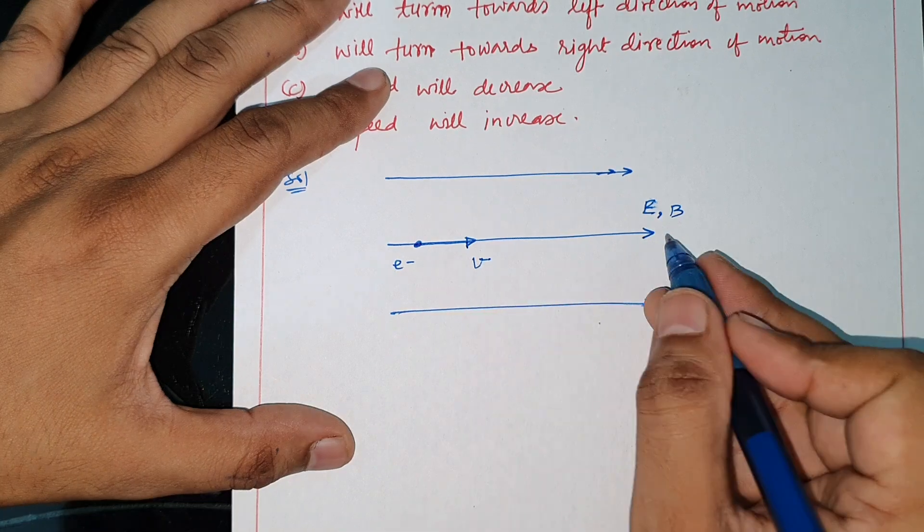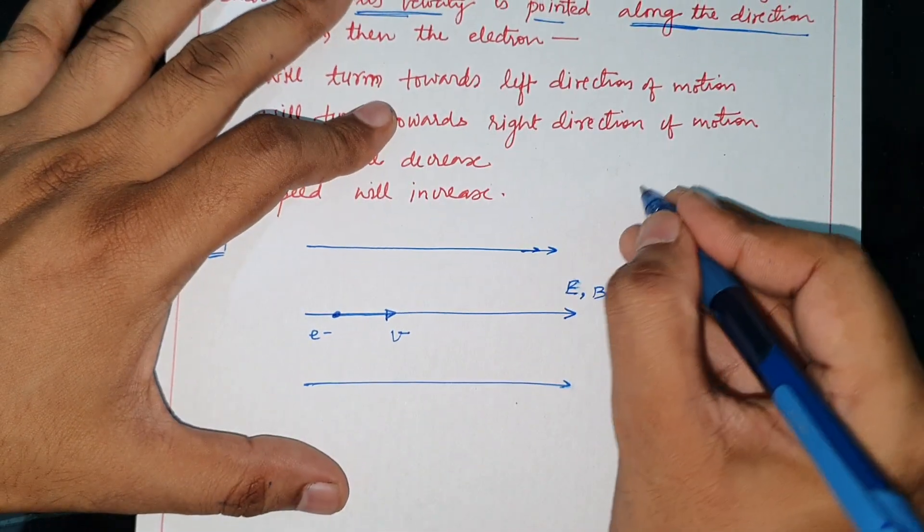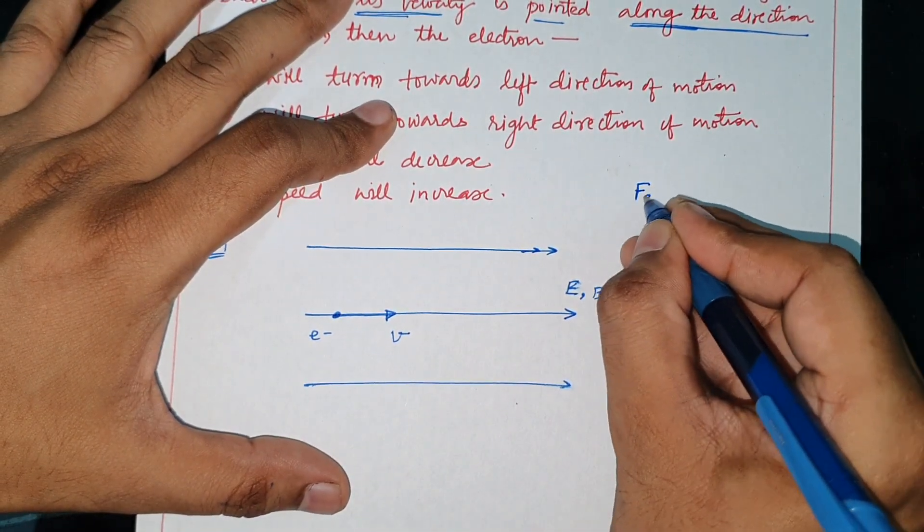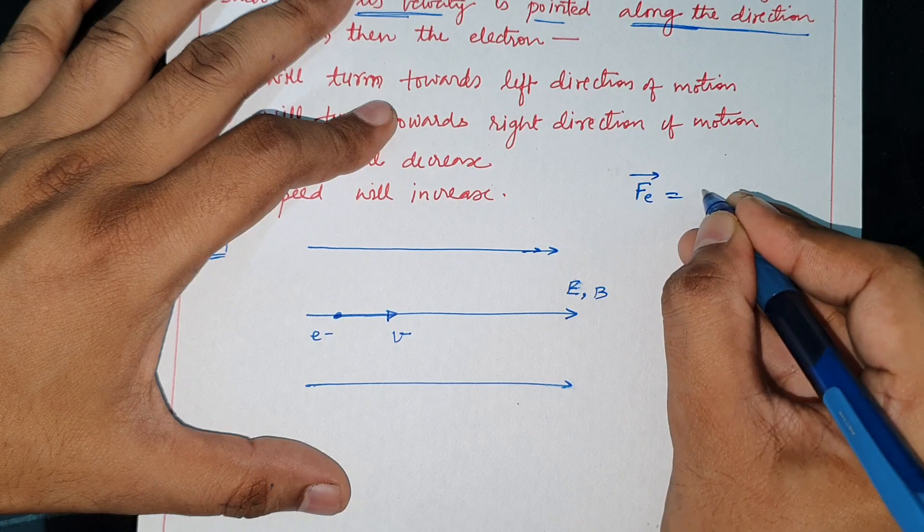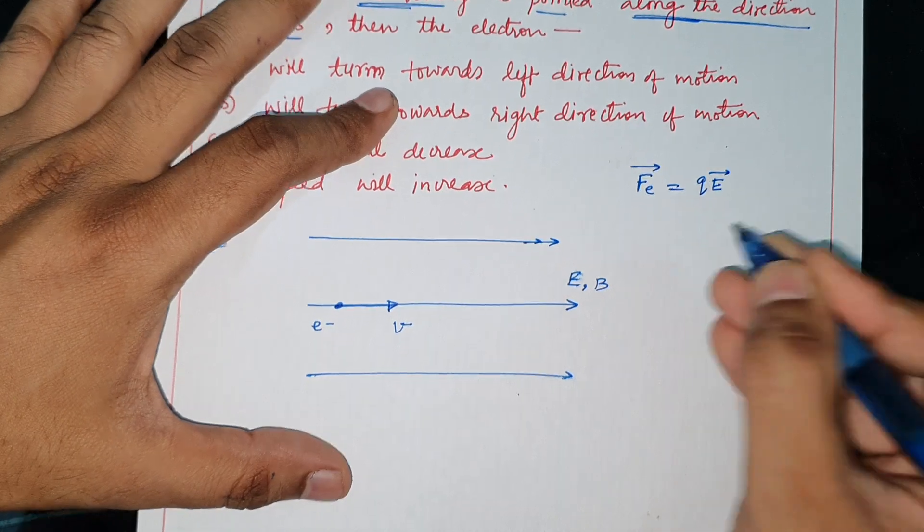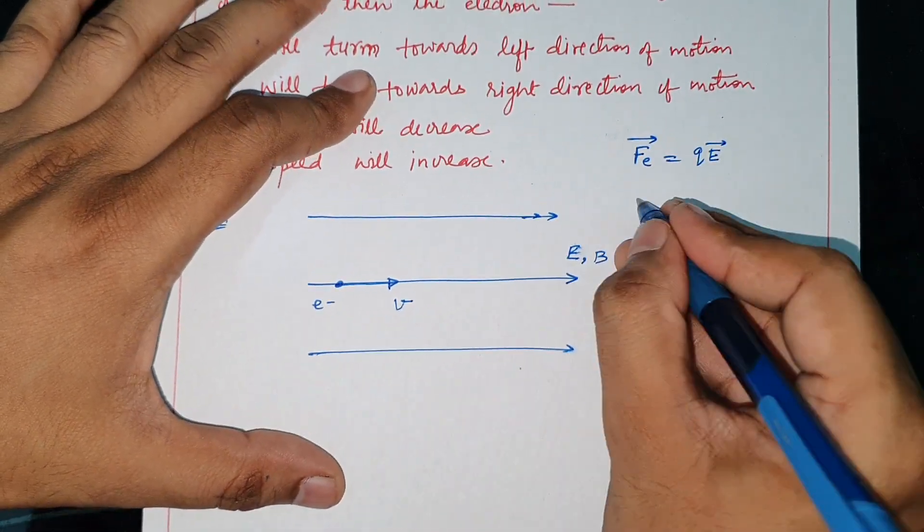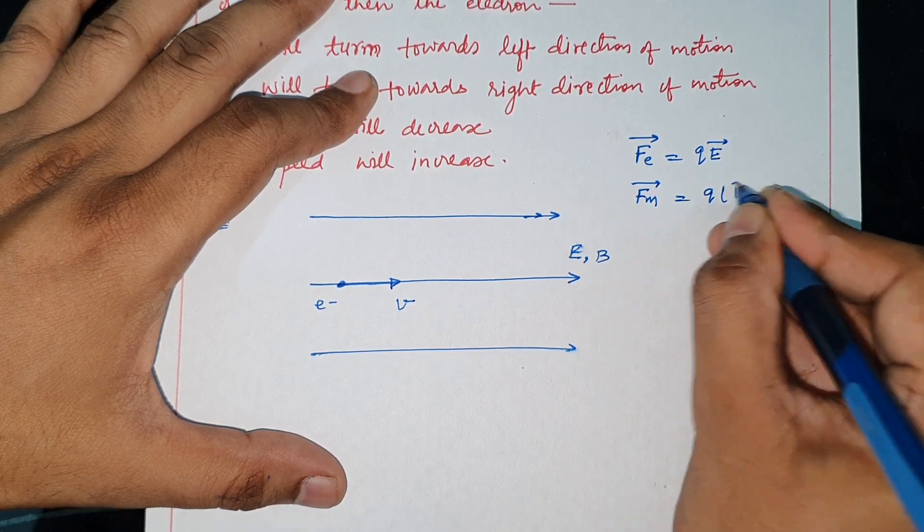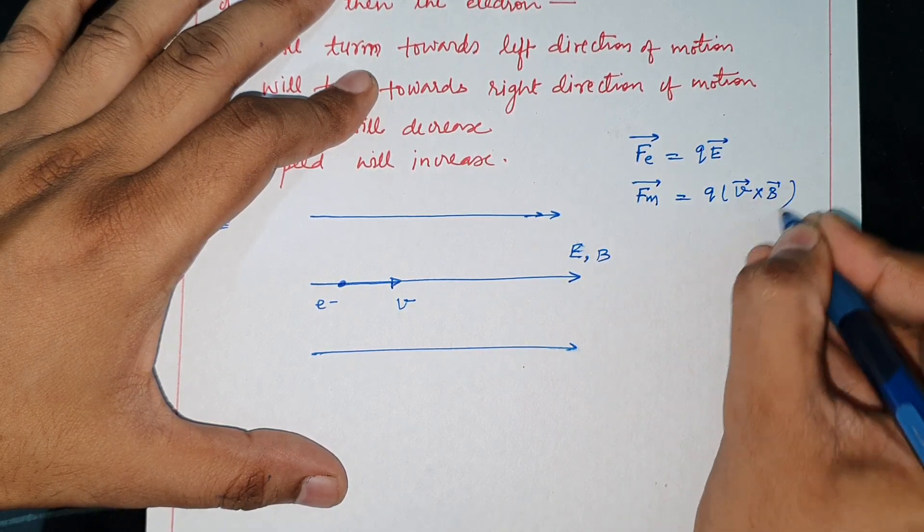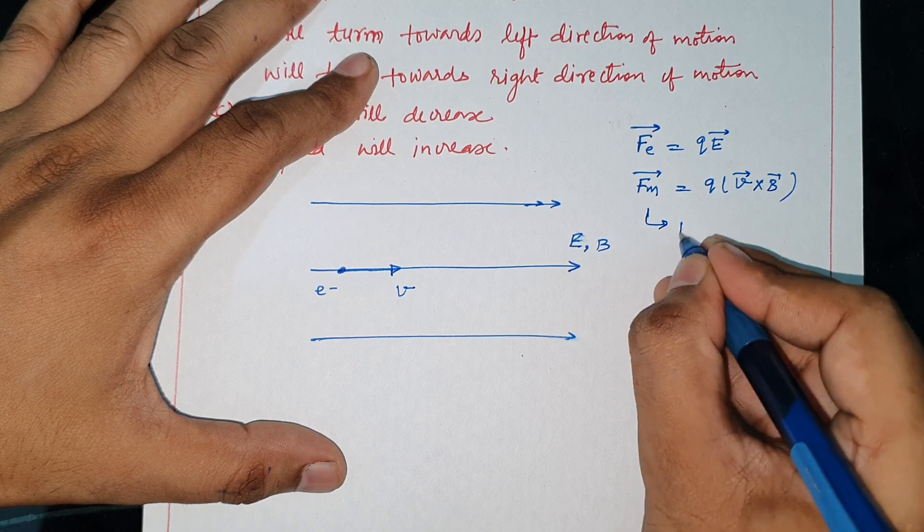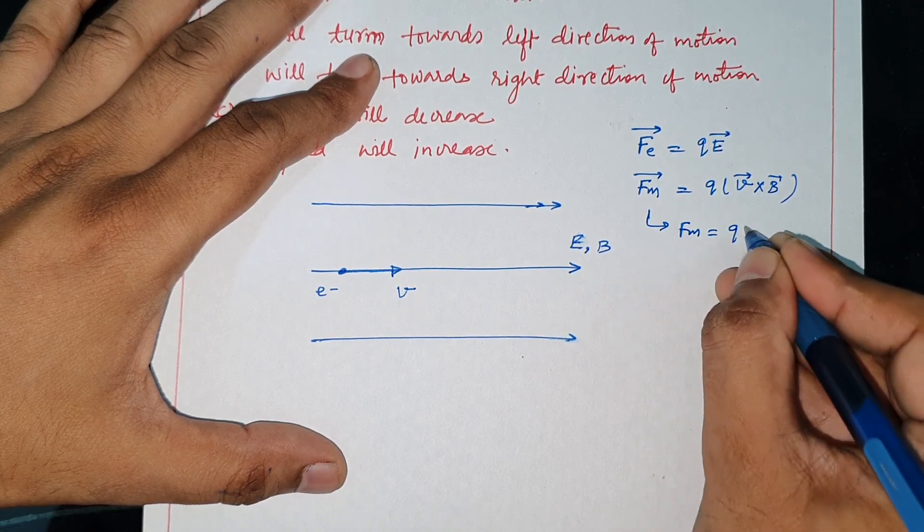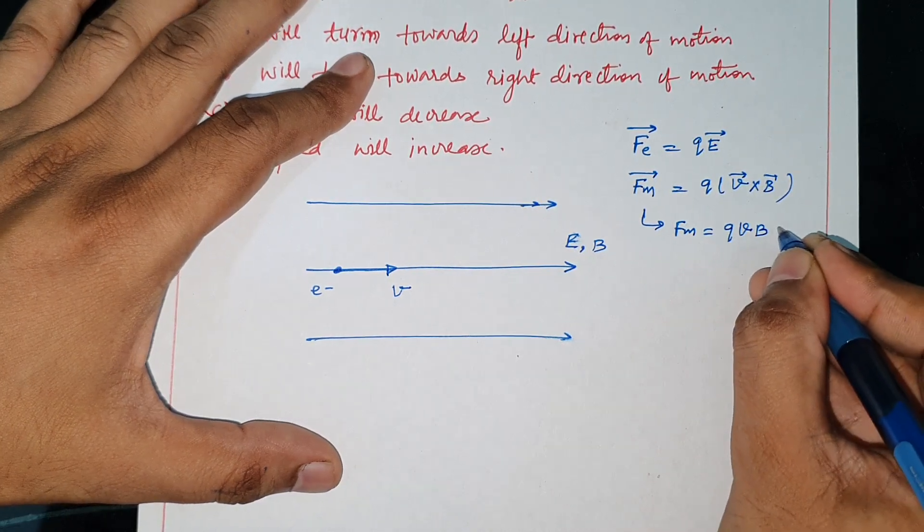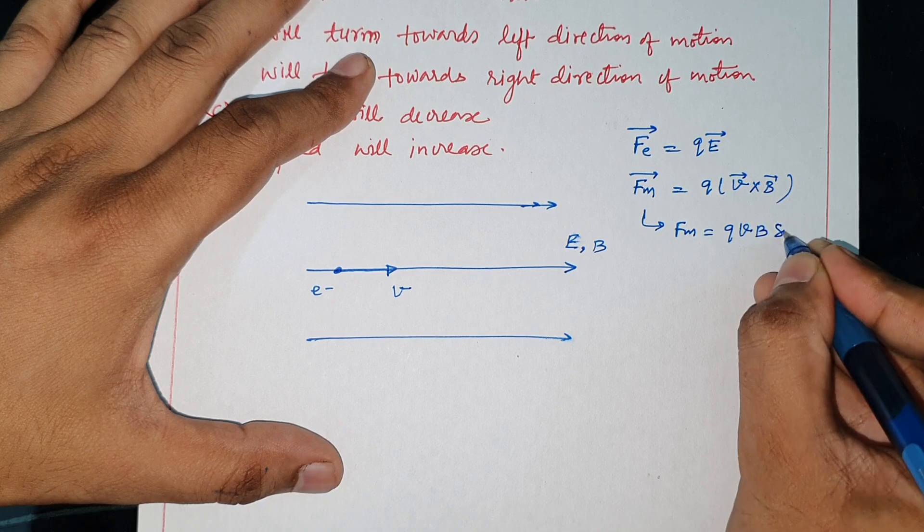If electron is in electric field only, force is equal to qE vector. And if electron is in magnetic field, then magnetic force is equal to F_m = q velocity vector × B vector. The magnitude is F_m = q|v||B|sin θ.